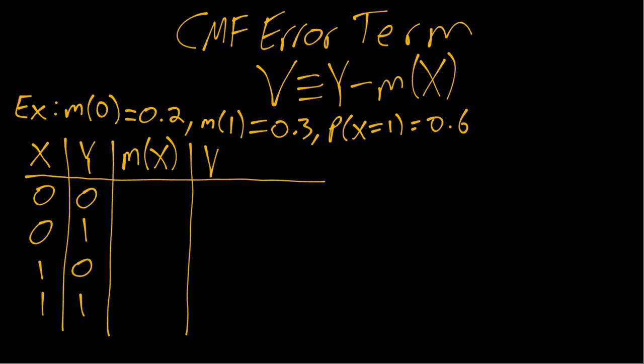Now m of x just depends on x. So if x is 0, m of x is 0.2. If x equals 1, then m of x is 0.3.